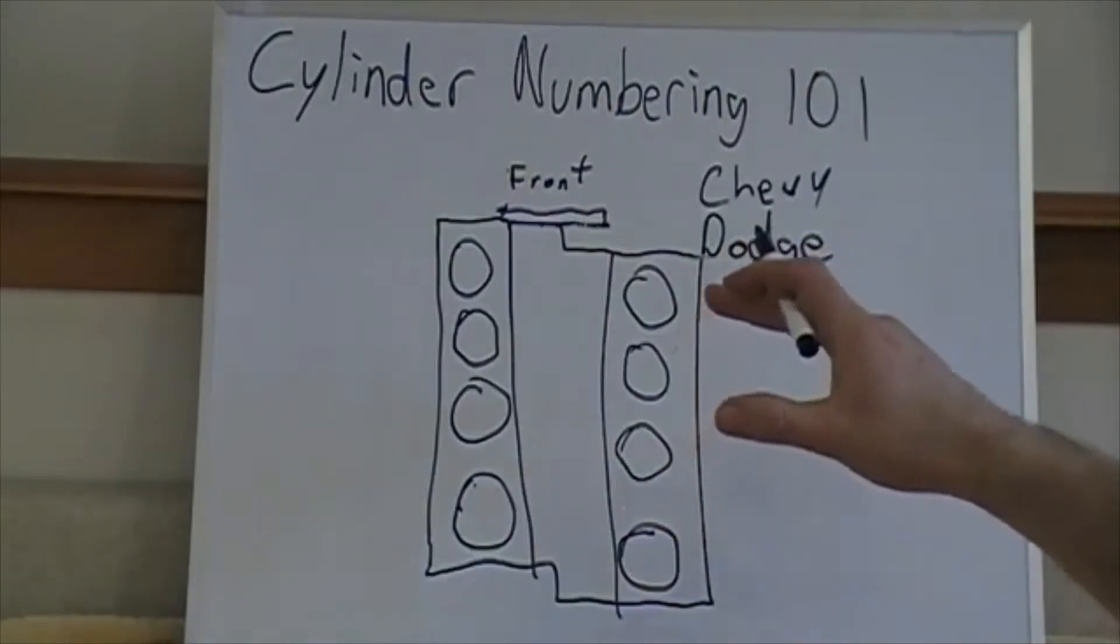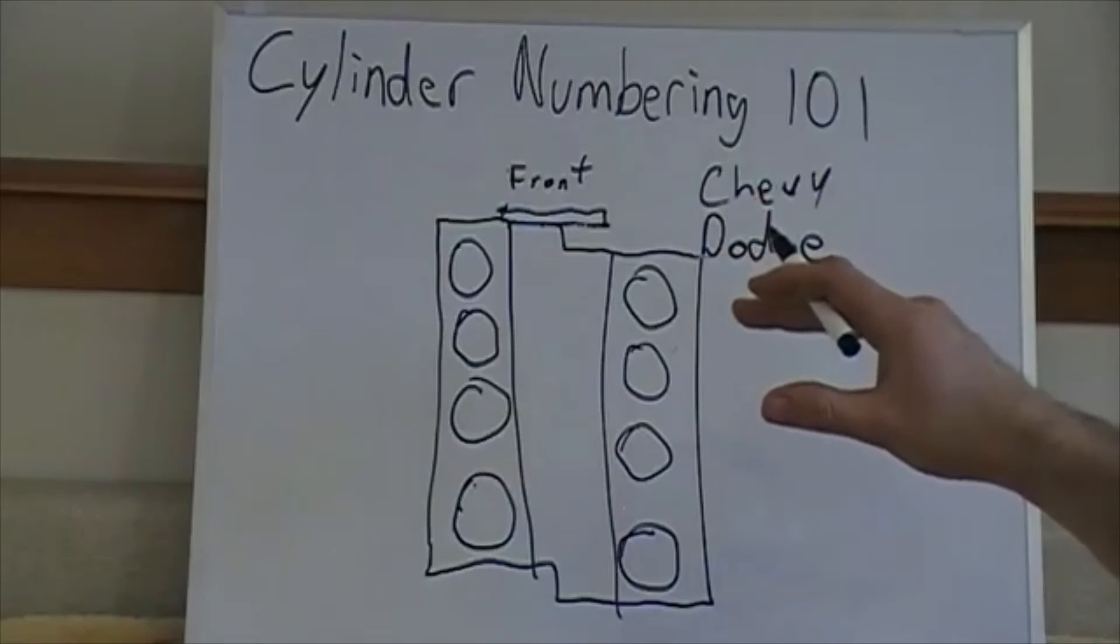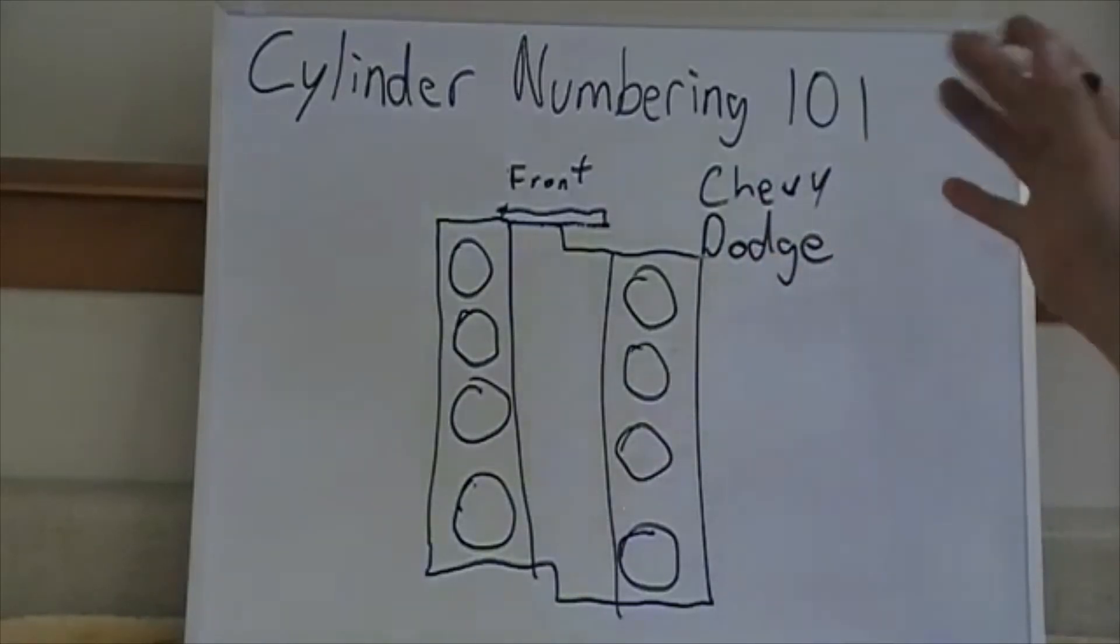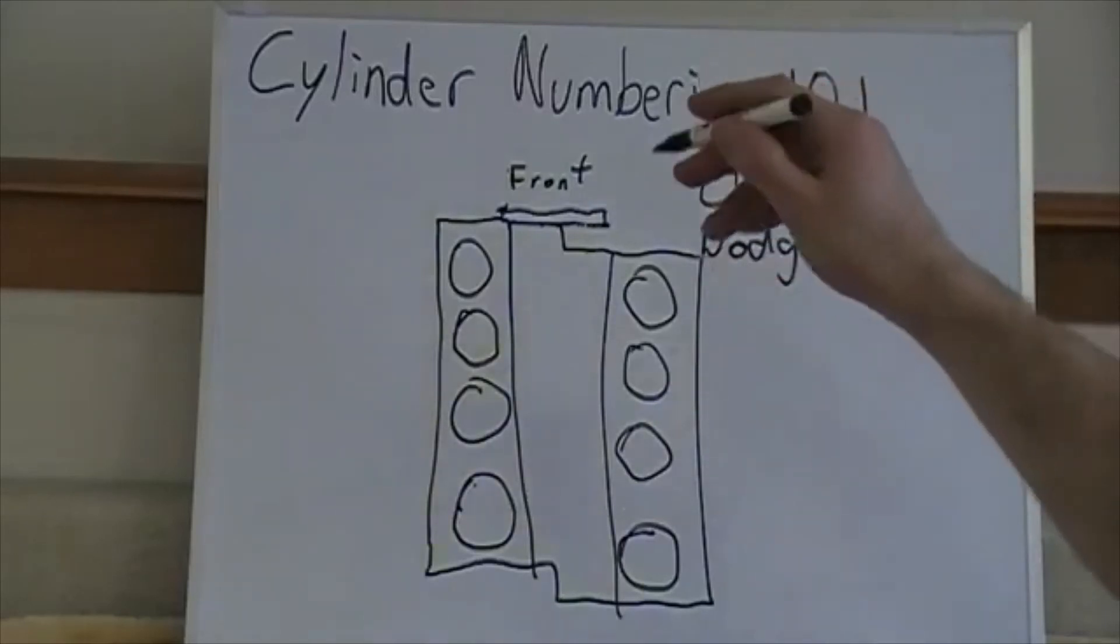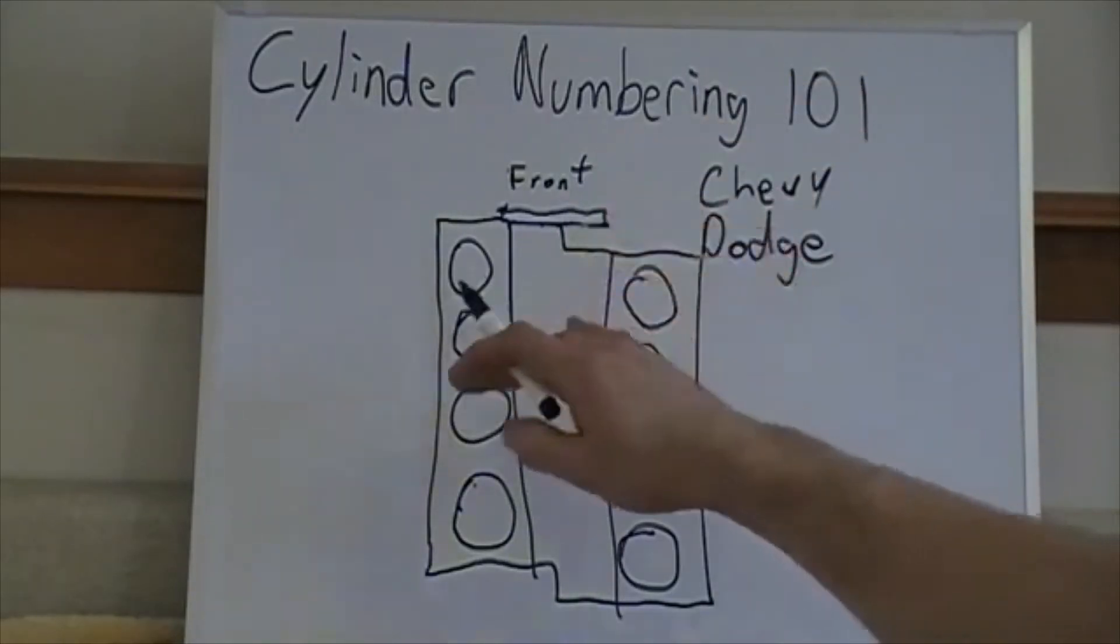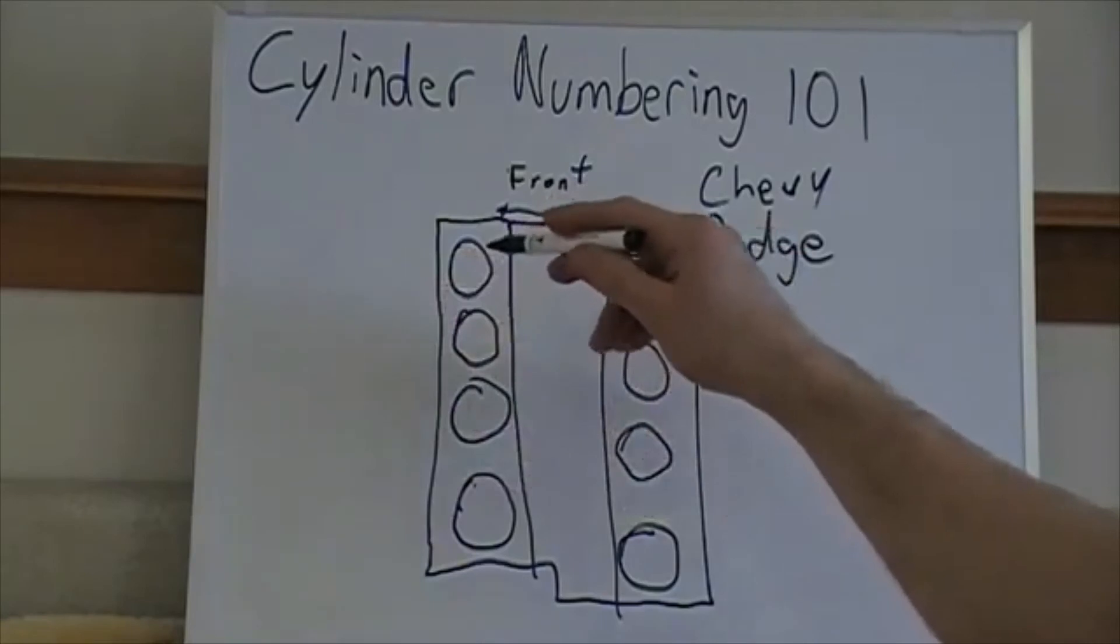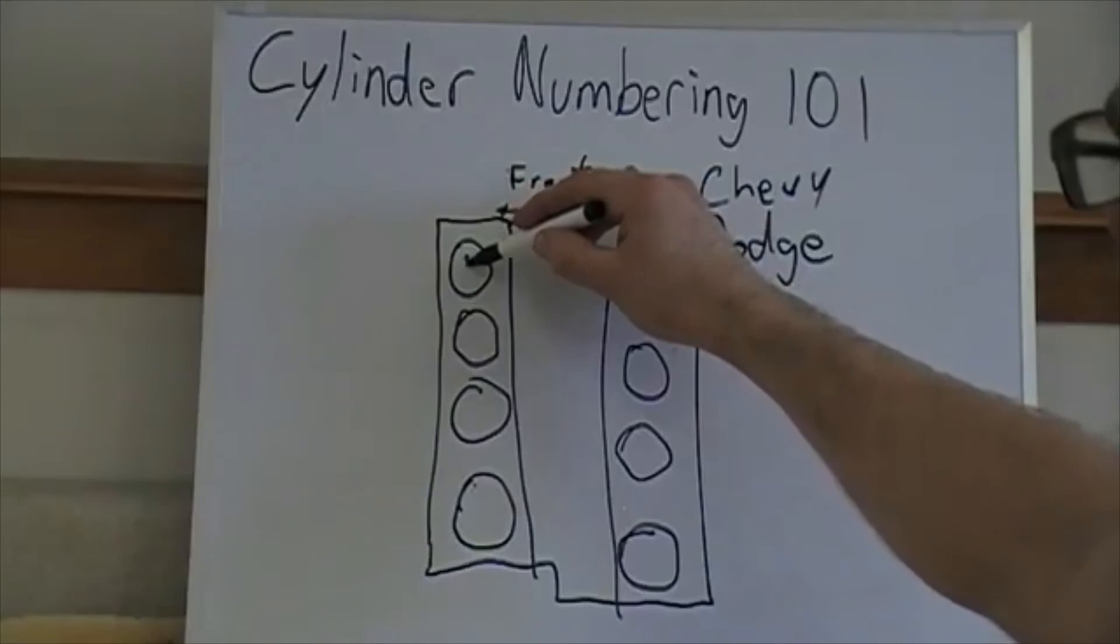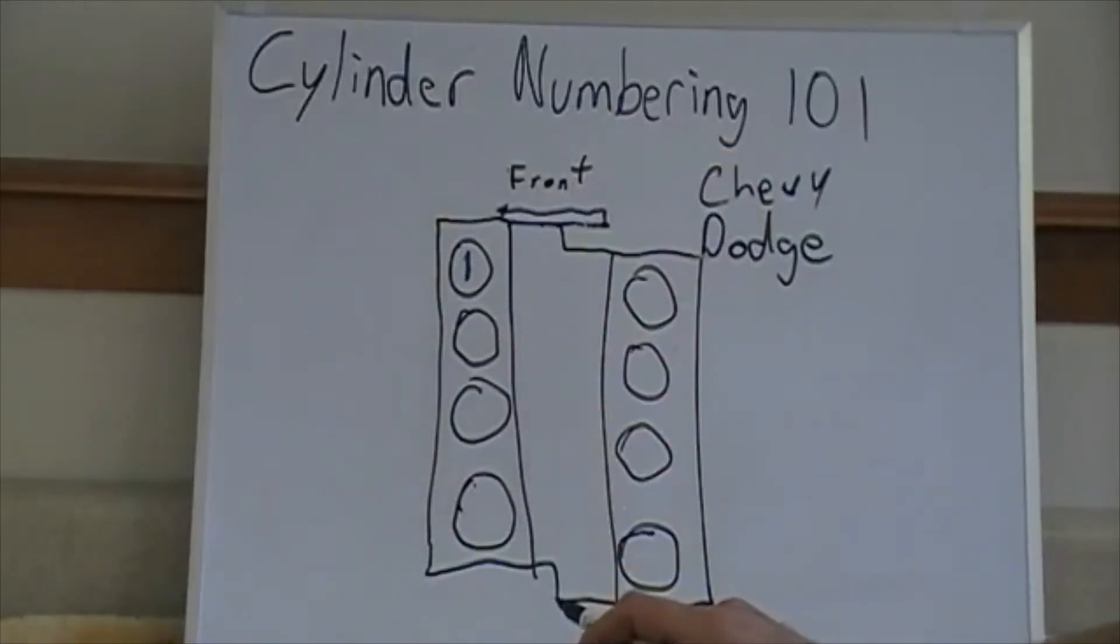Now this would be a typical V8 setup from Chevy or Mopar which would be Dodge, Chrysler, all those people. If you look at where our furthest forward cylinder, we're now over here on the driver's side which is going to be cylinder number one.